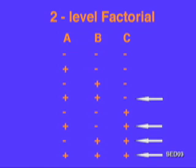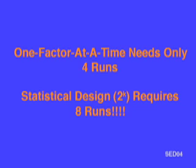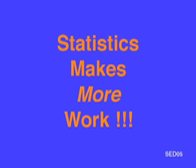According to your old physics course teacher, this was not a good experiment. And what's worse, look at all the runs. The trusty old one factor at a time needs only four runs. But the statistical approach requires eight runs. Statistics makes more work. But does it?